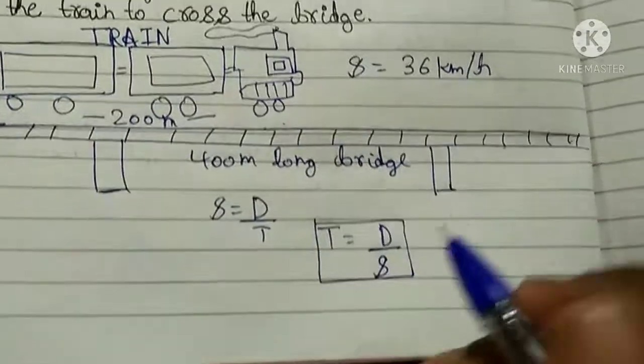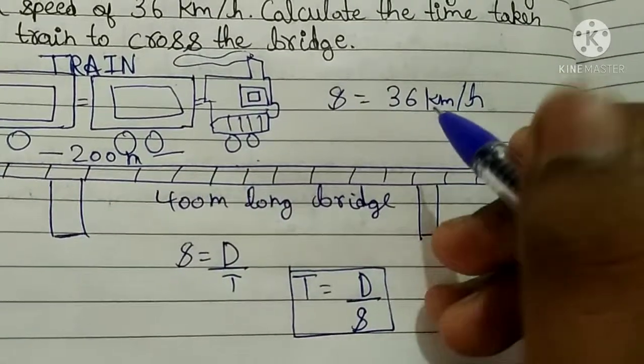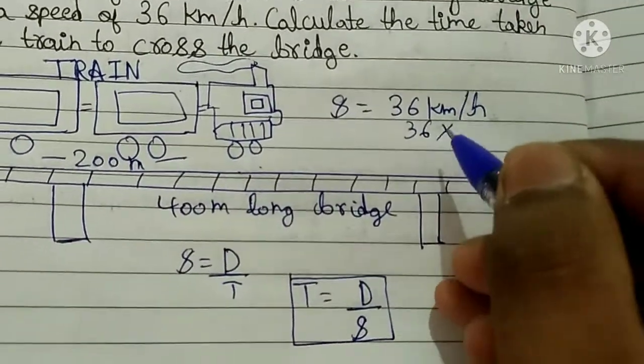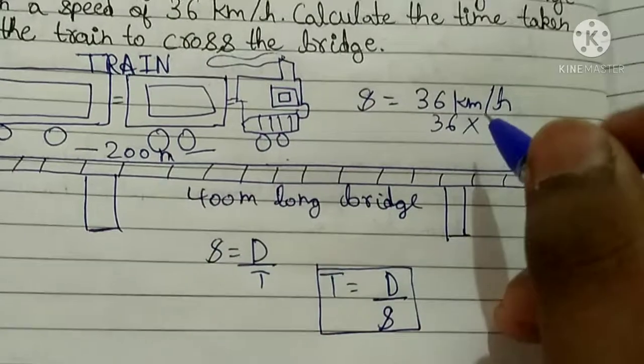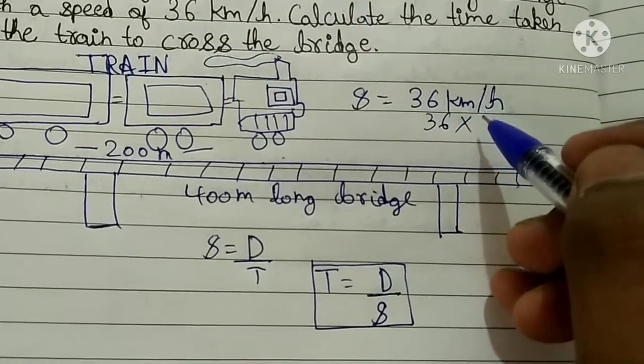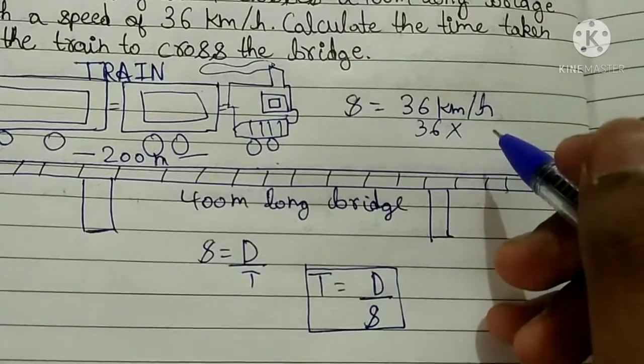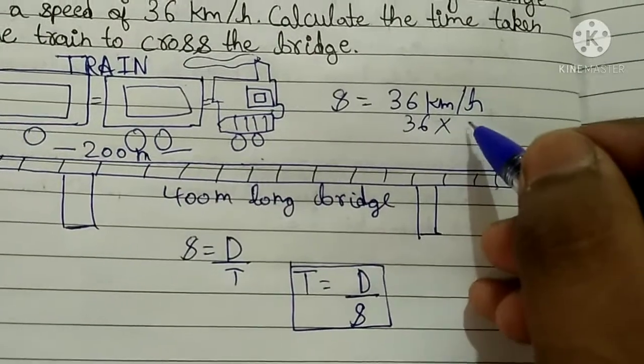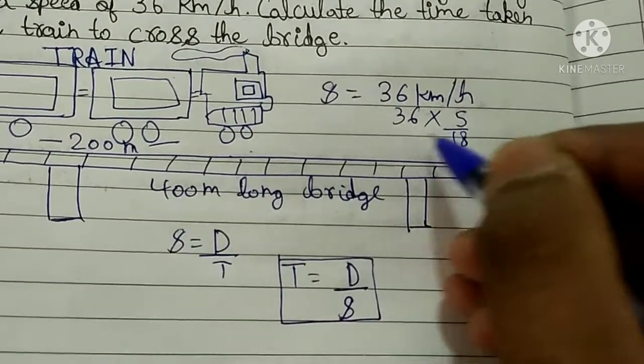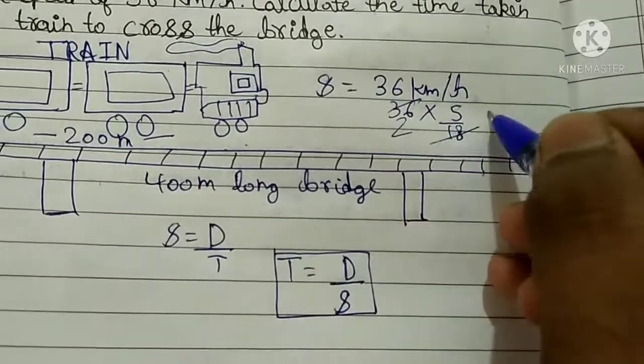Now we will put values in this formula. We will convert it into SI unit. If there is any higher or smaller unit, we will convert it to SI unit. So 36 km/h will be 36 into 5 by 18, which gives us 10 meters per second.